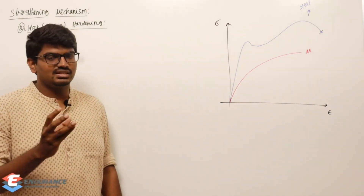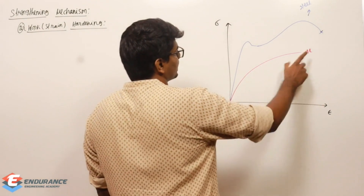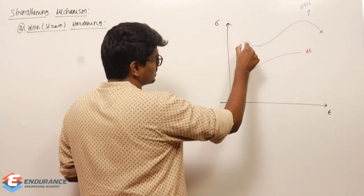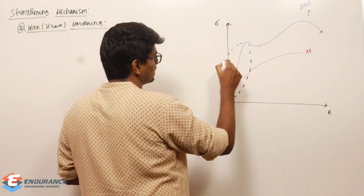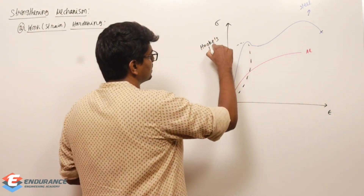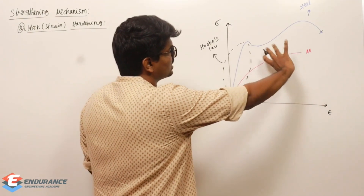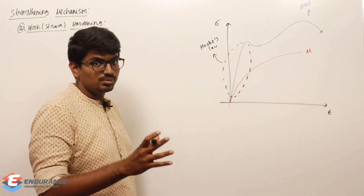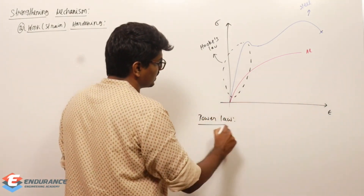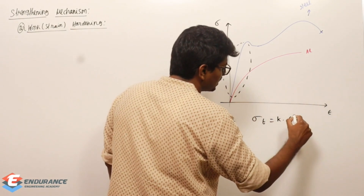We had a detailed discussion about the tensile test earlier, so I'm not bringing it again here. This curve is for aluminium. Now if you focus on the linear elastic region, this is where Hooke's law can be applied — stress is directly proportional to strain. But once we cross into the non-linear plastic deformation region, we can only apply the power law.